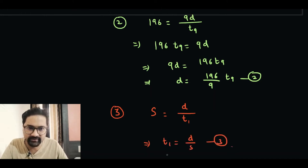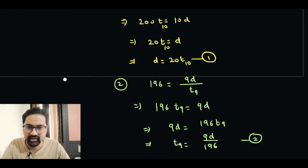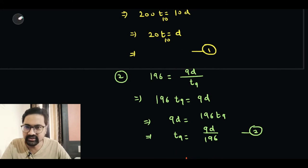I'm going to modify this equation and I'm going to rewrite this in terms of T9, because that's going to help us. So T9 will be 9D over 196. Over here I'm going to go up and I'm going to write the same thing over here as T10. T of 10 is equal to D over 20.